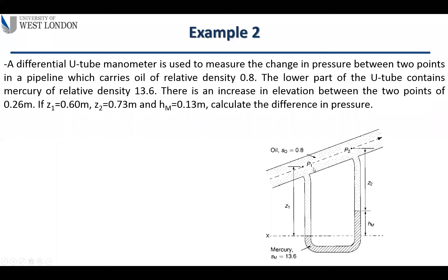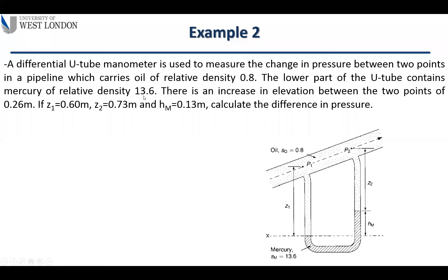In Example 2, a differential U-tube manometer measures the pressure change between two points in a pipeline carrying oil with a relative density of 0.8. Relative density means the density of the oil divided by the density of water — it's dimensionless and avoids large numbers. The lower part of the U-tube contains mercury with a relative density of 13.6.